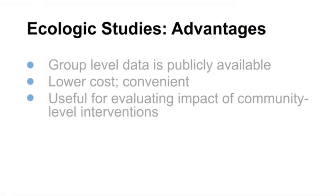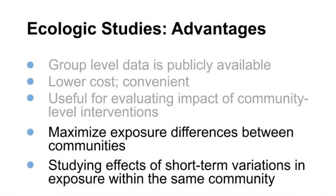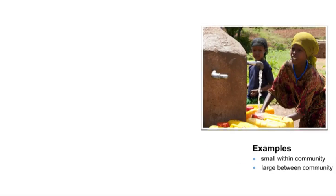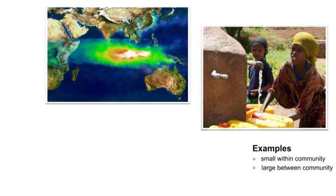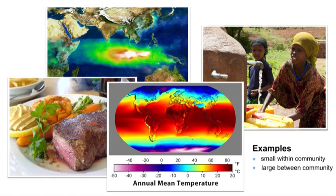Another advantage of an ecologic study is that this design can maximize exposure differences between communities where minimal within-community differences render individual risk studies impractical. Whereas exposures may differ substantially between communities such as cities, states, or countries — for example, the effect of latitude on the risk of multiple sclerosis — ecologic studies are also useful for studying the effects of short-term variations in exposures within the same community, such as temperature and mortality. Examples include quality of drinking water, concentrations of air pollutants such as ozone and fine particles, average fat content of diet, and cumulative exposure to sunlight, where larger differences exist by latitude than among individuals within the same latitude.